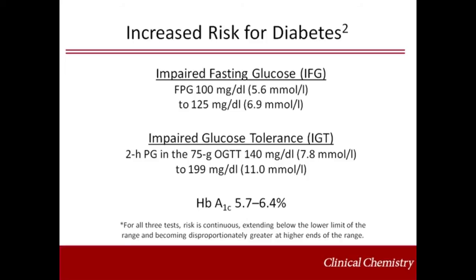It has been shown that a 5.7 percent cut point has a sensitivity of 66 percent and a specificity of 88 percent for the identification of subsequent six-year diabetes incidence. It should be noted that for all three measurements, risk is continuous so that as hemoglobin A1C rises, the risk of diabetes rises disproportionately.